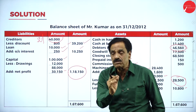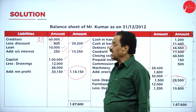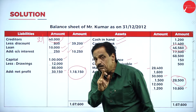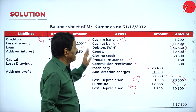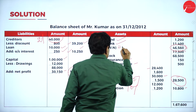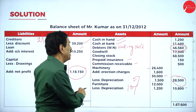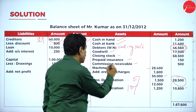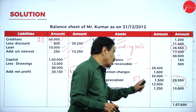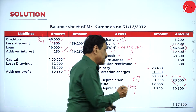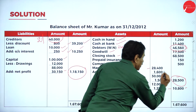Loan amount is 10,000; interest 250 for 3 months; total payable 10,250. Capital is 1 lakh; drawings 12,000; balance 88,000; add net profit 30,150 = 1,18,150. Cash in hand and cash in bank are assets. Debtors per working note: 46,550. Goodwill is an asset. Closing stock from adjustment. Prepaid insurance for 3 months — 150. Commission receivable 500. Machinery: 28,400 + erection 1,600 = 30,000; less depreciation 1,500 = 28,500. Furniture: 12,000 less depreciation 1,200 = 10,800.